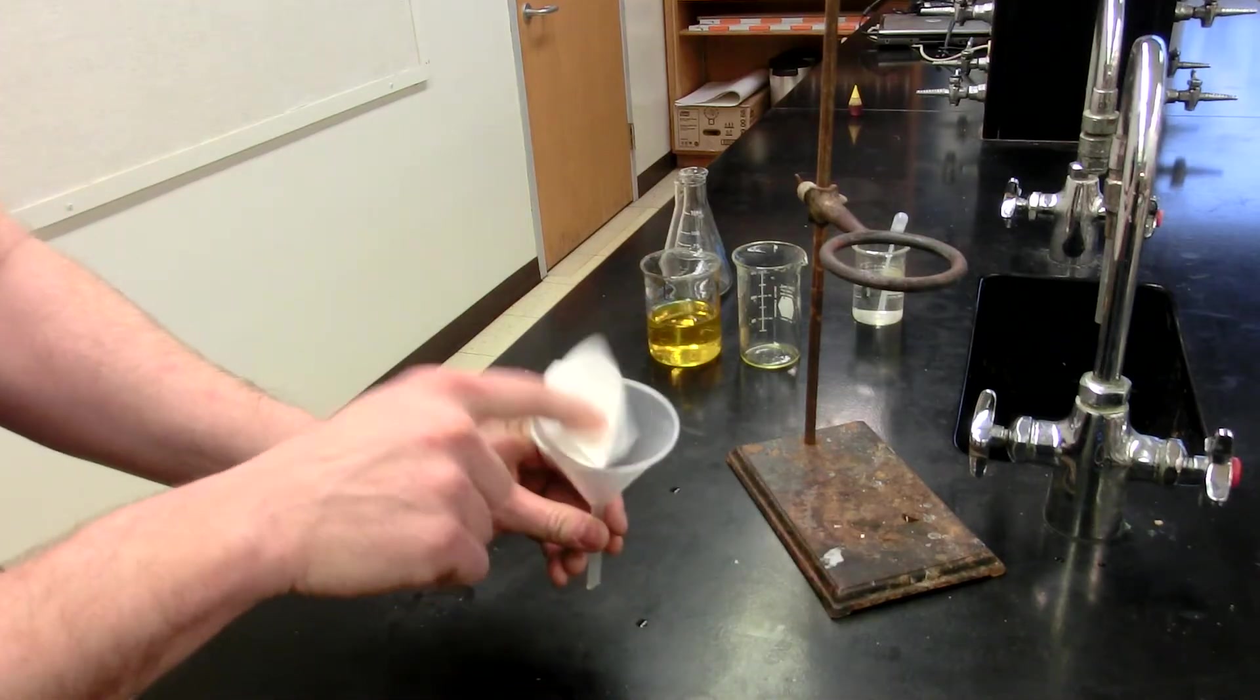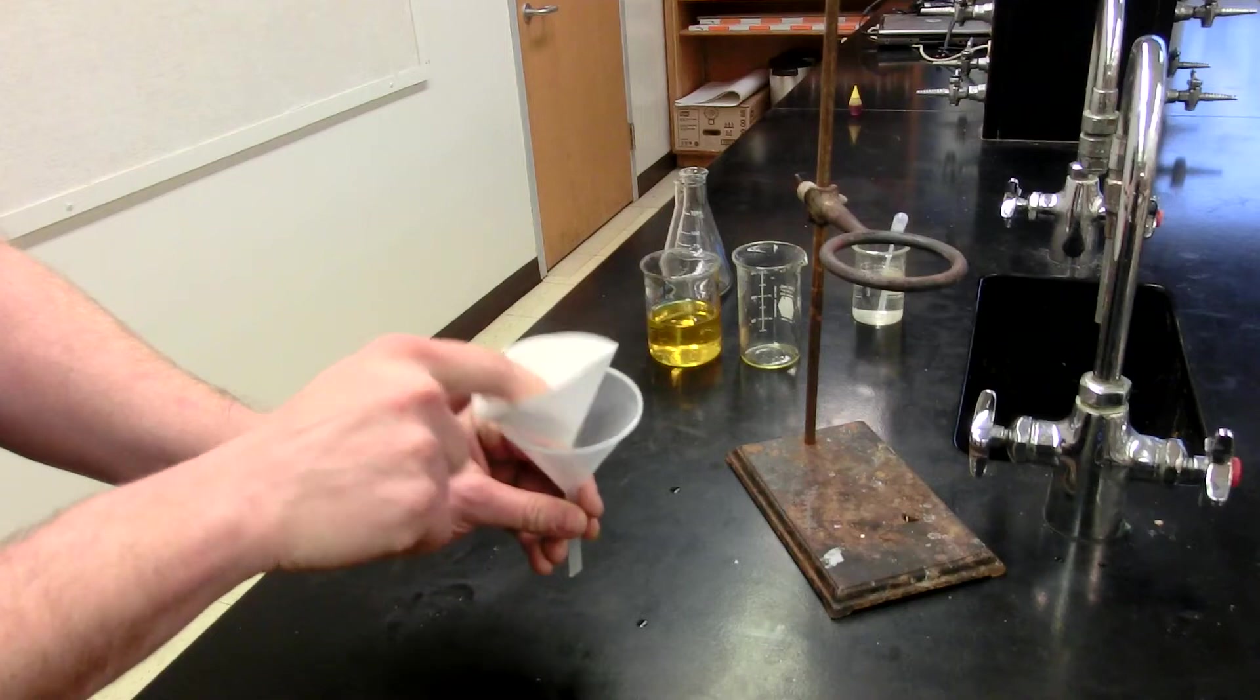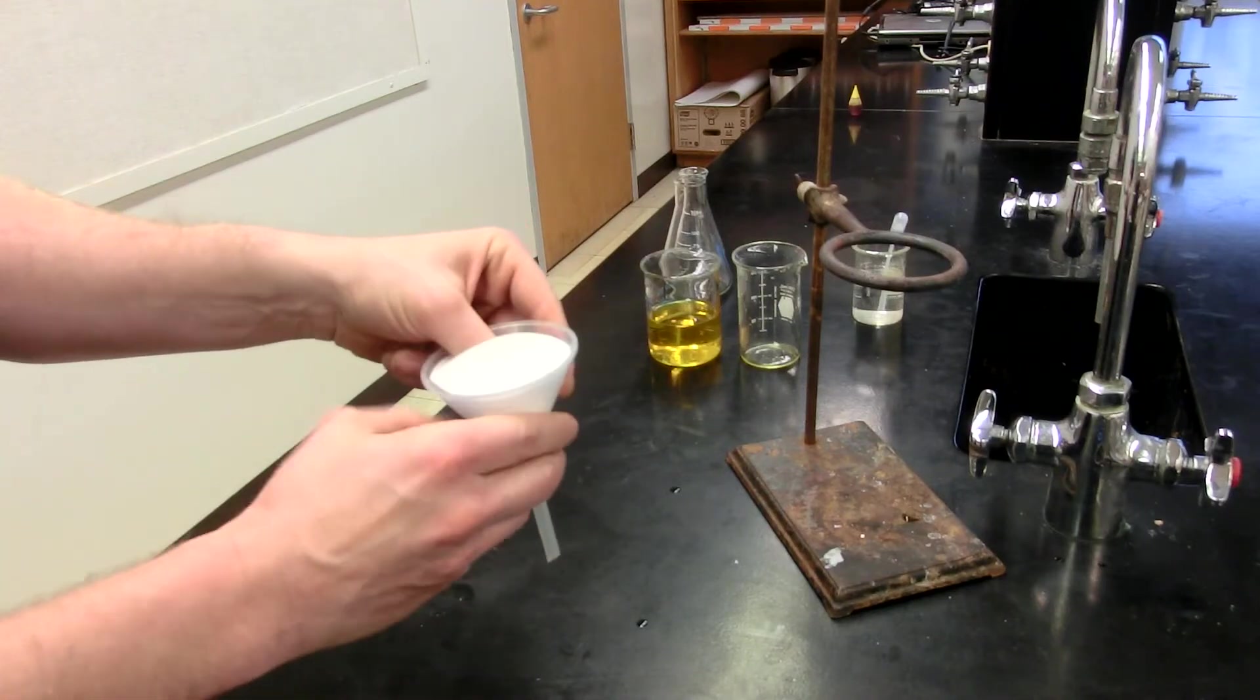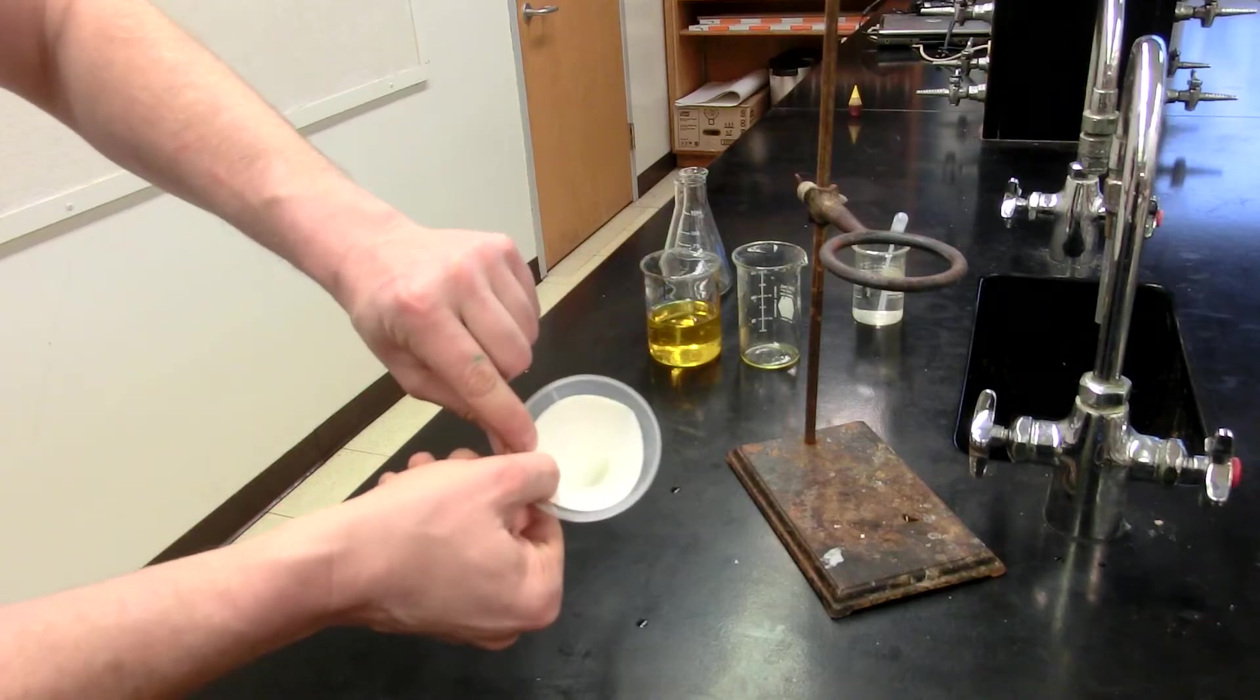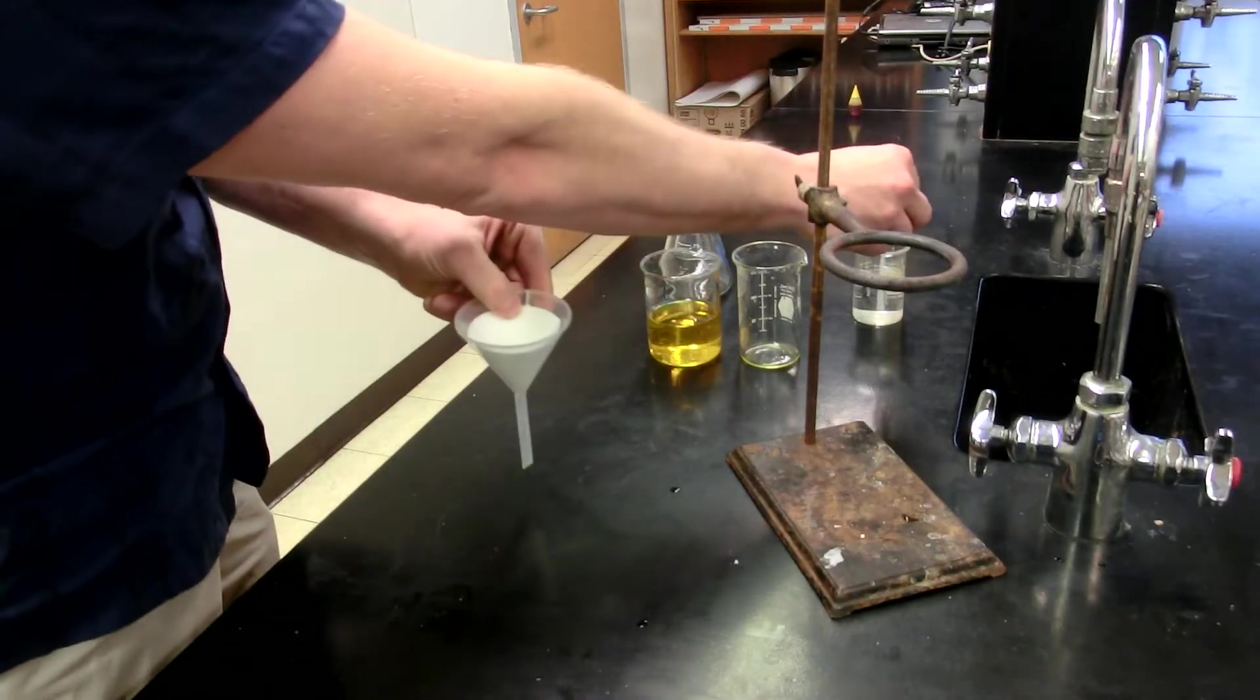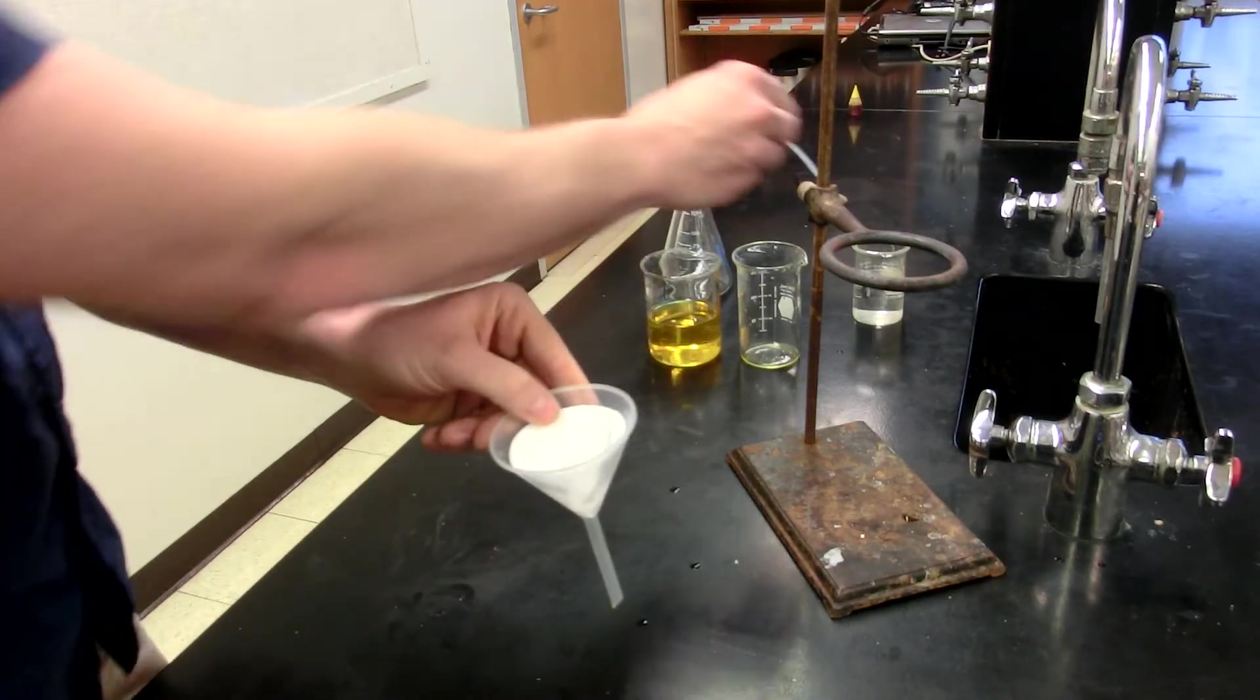And you'll notice when you go to stick the filter paper into the funnel, it kind of doesn't stay where you want it to. How do you get it to stay? Once again, three layers of paper on one side, one layer of paper on the other. Hold it steady, grab some water, and squirt some water into it.